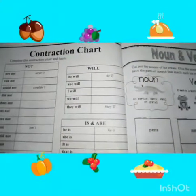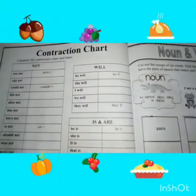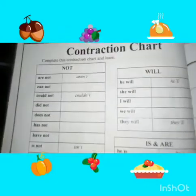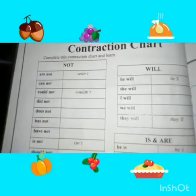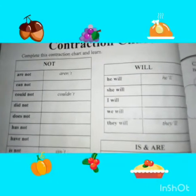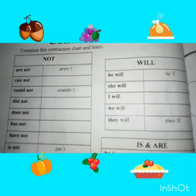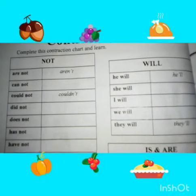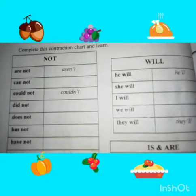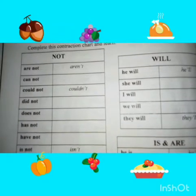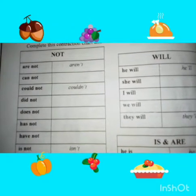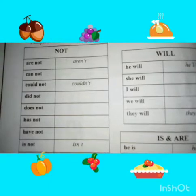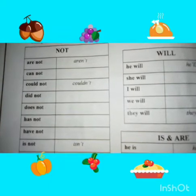Assalamu alaikum students, how are you all? Today we learn the contraction chart — complete this contraction chart and learn a word produced by running two or more words together and leaving out some of the letters or sounds. For example: is not.